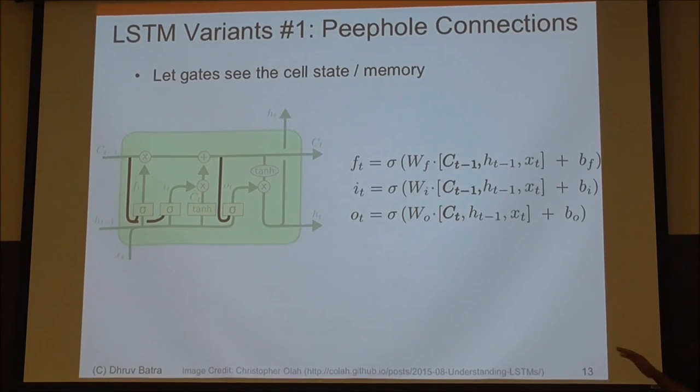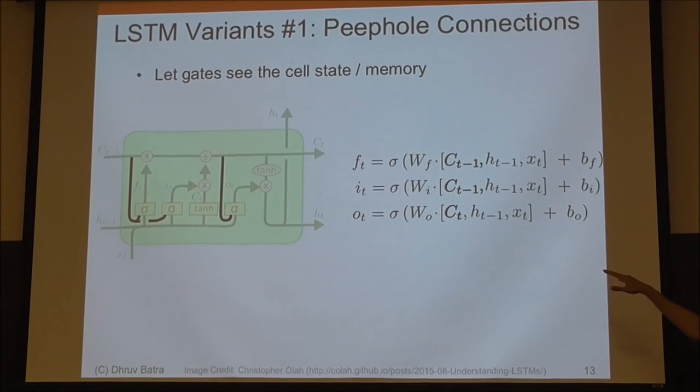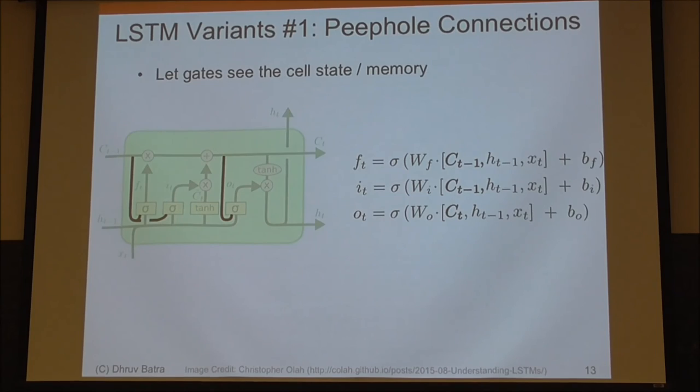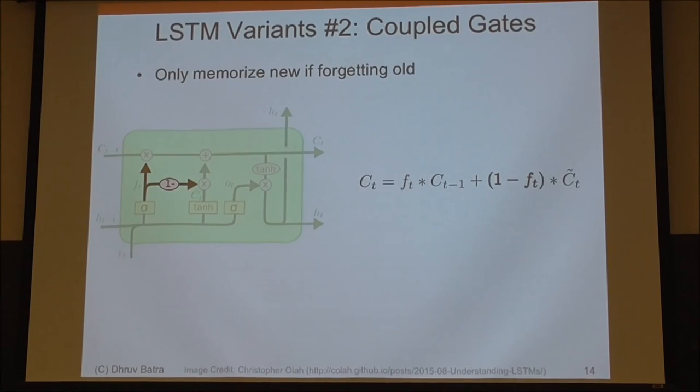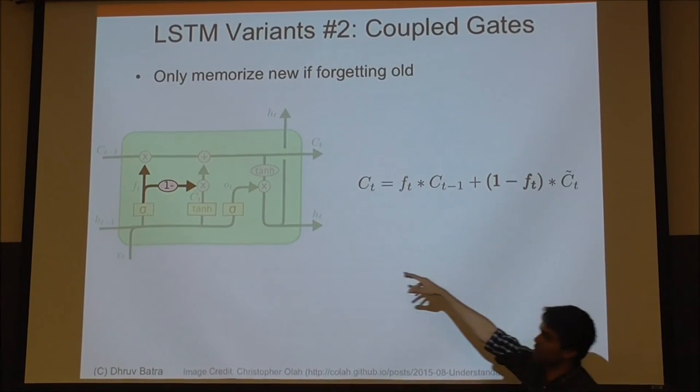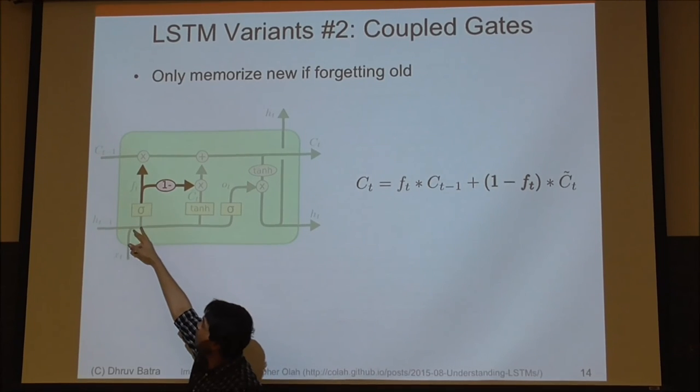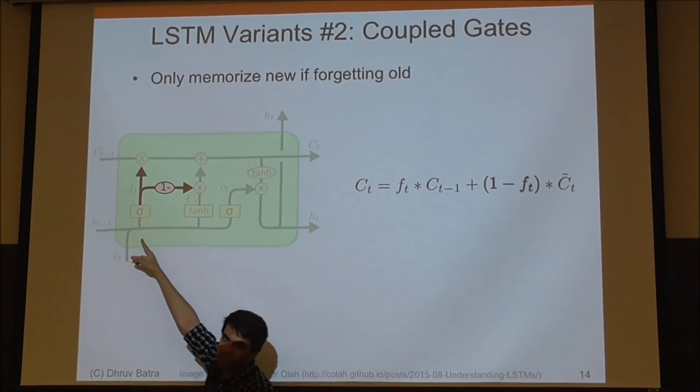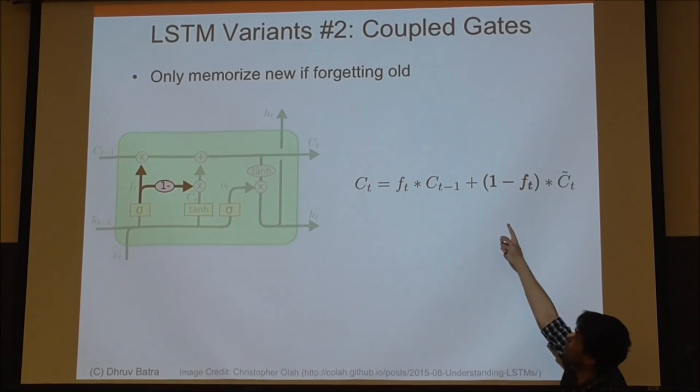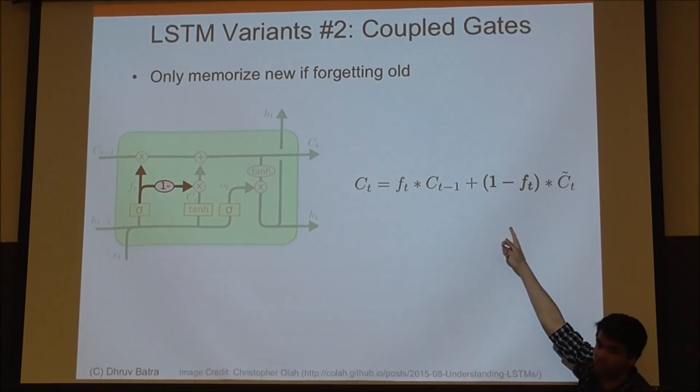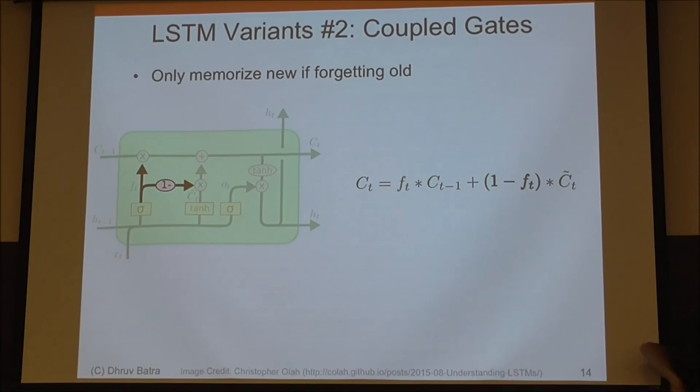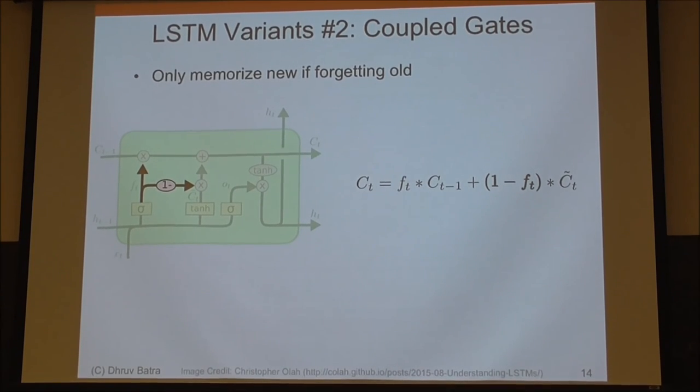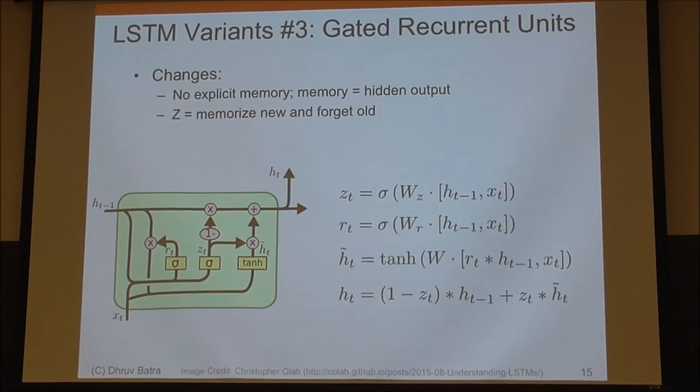So variants. A couple of variants. You can do the peephole connection stuff where the memory is added to everything. You can do this coupled gate thing that Aishwarya asked about. So you don't have an input and a forget gate that are separate. You just have one gate. And if you're forgetting, that's what turns the input on. So if f is 1, this is 0. If f is 0, this is 1, which is 1 minus f.